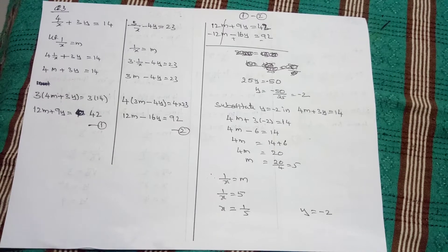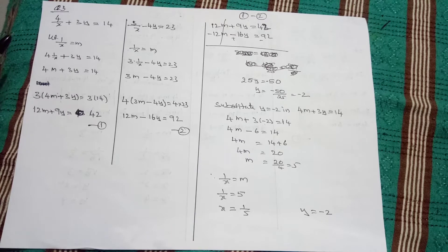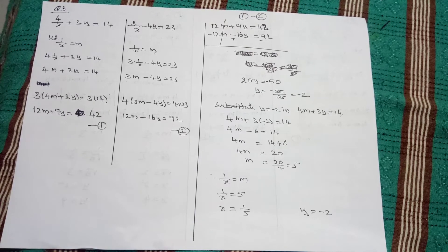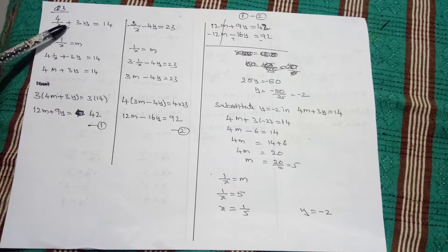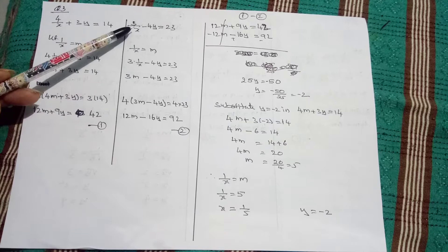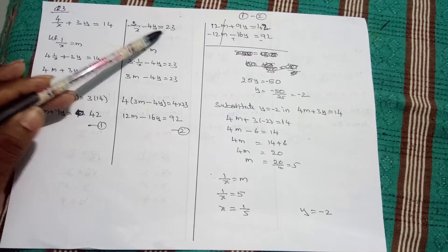Hello students, this is the third bit. First question, 3.6 exercise. Here, 4 by x plus 3y equals 14. 3 by x minus 4y equals 23.